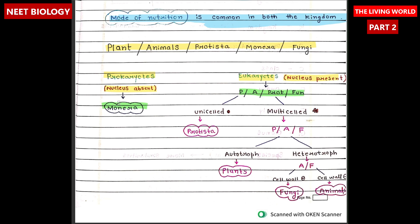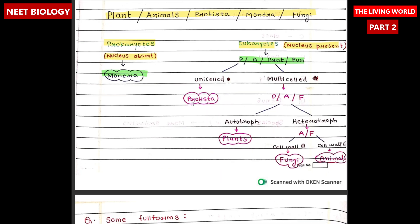Prokaryotic cells, like those found in bacteria and archaea, lack a nucleus and membrane-bound organelles, while eukaryotic cells found in Plantae, animals, fungi, and Protista possess both a nucleus and other organelles. It is further divided into unicellular and multicellular. Protista is unicellular, and Plantae, Animalia, and Fungi are multicellular. Further, Plantae, Animalia, and Fungi are divided into autotrophs and heterotrophs.